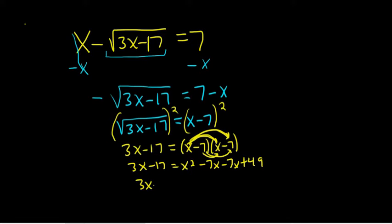So we have 3x minus 17 equals x squared. Combining like terms, we have minus 14x plus 49. Getting there. So now we have to set this equal to 0. So we'll subtract the 3x. Going kind of fast, a long problem. And add the 17.